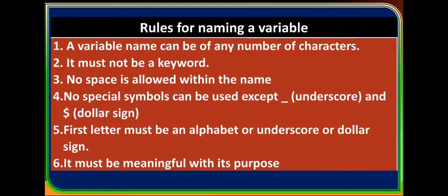Rules for naming a variable: A variable name can be of any number of characters but it should not be a reserved keyword. If the variable name is a group of multiple words, no space is allowed within the name. You cannot use any special symbols except underscore and dollar sign. The first letter must be an alphabet, underscore, or dollar sign — not a number. One Java convention: the name must be meaningful with its purpose. For example, a variable storing a student's name should be named 'studentName' or 'sName'.